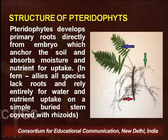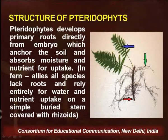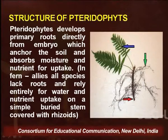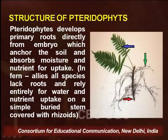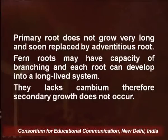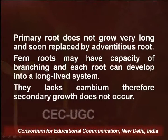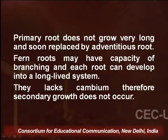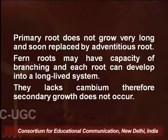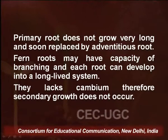Pteridophytes develop primary roots directly from the embryo, which anchor the soil and absorb moisture and nutrients. In most fern and related species, they lack roots and rely entirely for water and nutrient uptake on a simple buried stem covered with rhizoids. The primary roots do not grow very long and are soon replaced by adventitious roots, which may branch into long-lived systems. These systems lack cambium; therefore, secondary growth does not occur in the primary roots or the adventitious roots of pteridophytes.